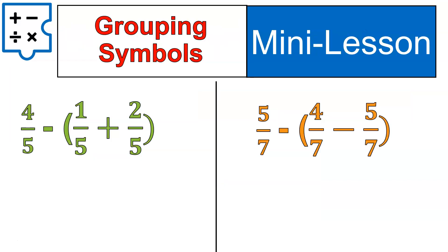First off, let's talk about grouping symbols. We are going to be working with fractions today, so I want to do most of my examples using fractions. Let's start off with these grouping symbol questions. When we're taking four-fifths minus the quantity of one-fifth plus two-fifths, what we need to do is apply that negative sign to all terms.